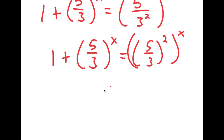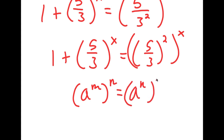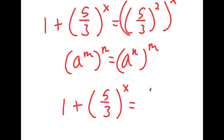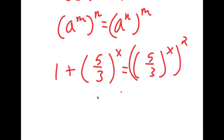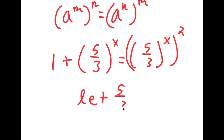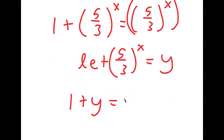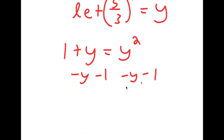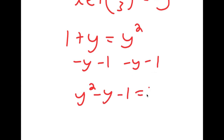Now I have (5/3) squared to the power of x. Using the rule (a^m)^n = a^(m·n), (5/3) squared to the power of x is the same thing as (5/3) to the power of x, squared. Now I'm going to let (5/3) to the power of x equal the variable y. So I get 1 plus y is equal to y squared, and subtracting y and 1 from both sides gives y squared minus y minus 1 is equal to 0.